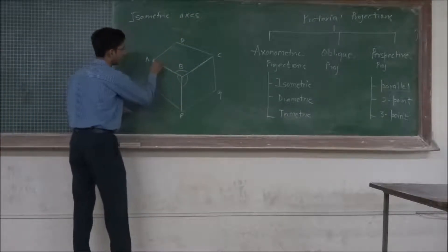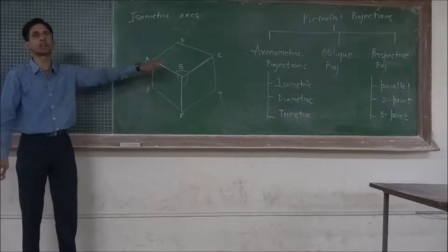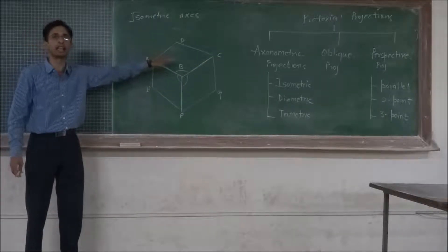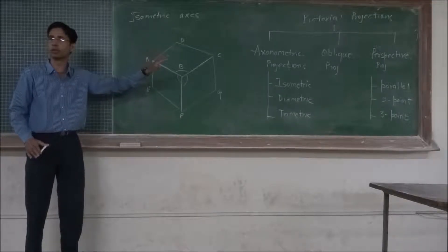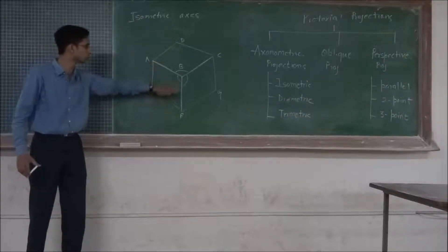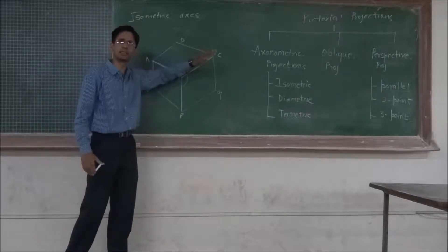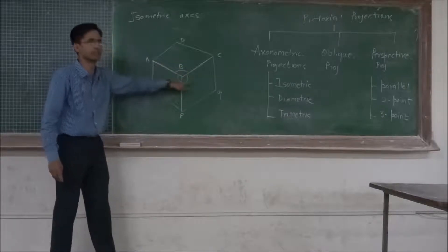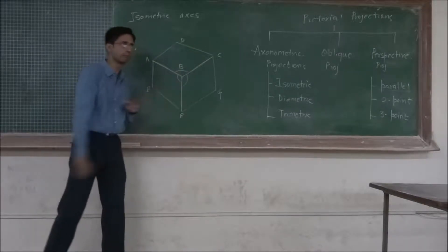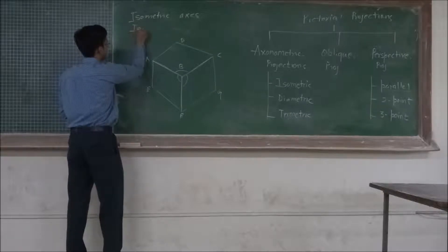All the lines which are parallel to these three lines are called isometric lines. Whenever we draw any isometric drawing, most of the lines — with few exceptions — will be parallel to these three lines. So whatever complex objects we may draw, all these lines are called isometric lines.